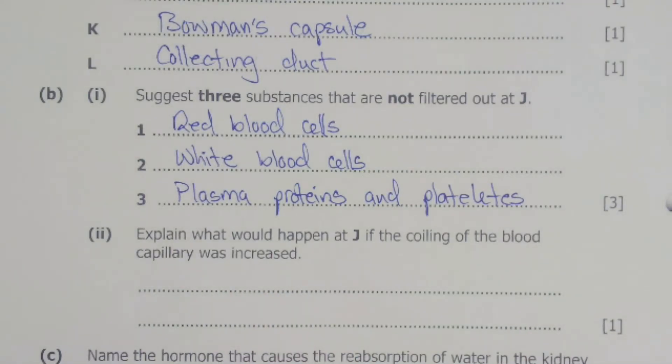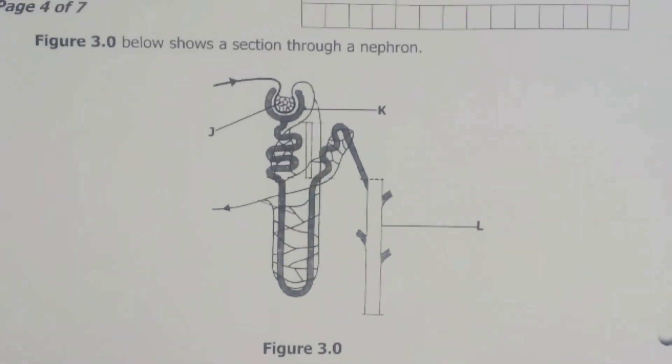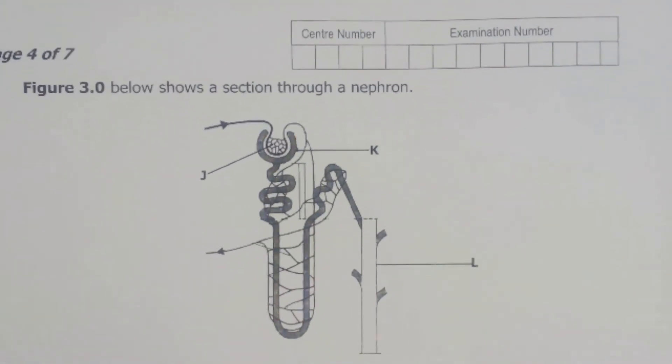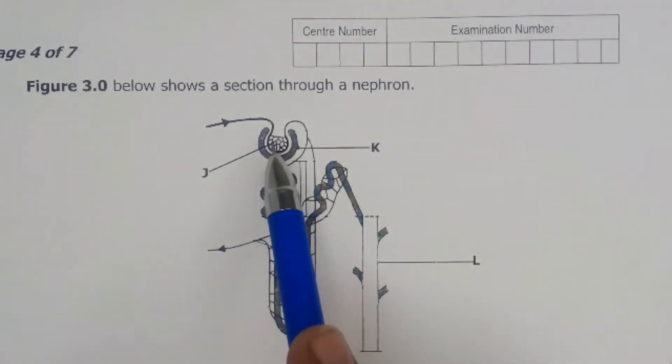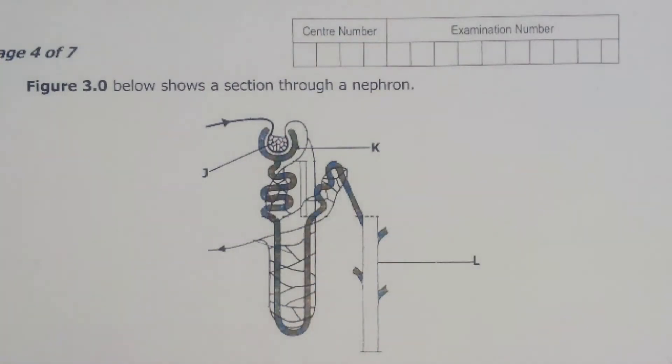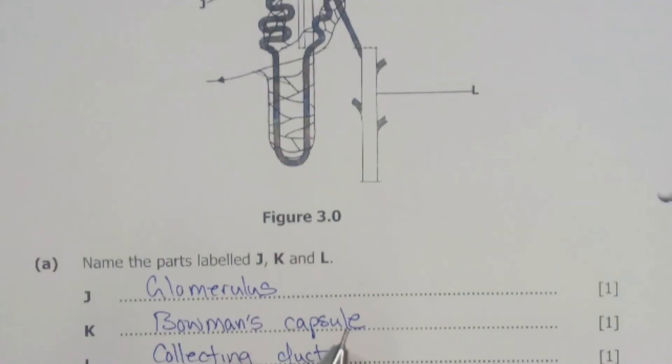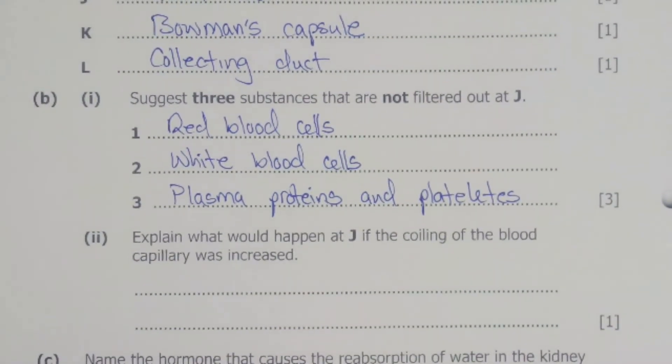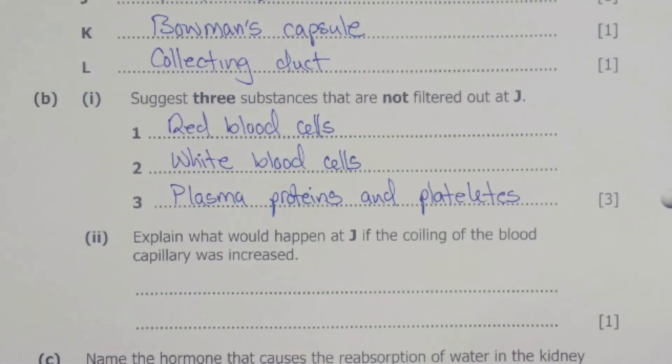Now when we increase the glomerulus, it means that we now have a large surface area. So more coiling inside the glomerulus gives us a large surface area, meaning that more ultrafiltration is going to take place. So we can say: increased coiling in part J would increase the surface area. This would in turn increase the process of ultrafiltration.